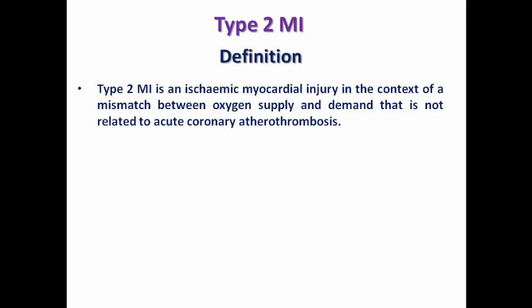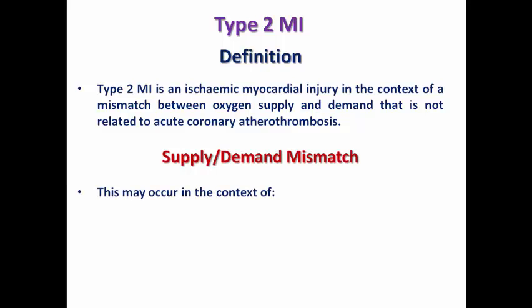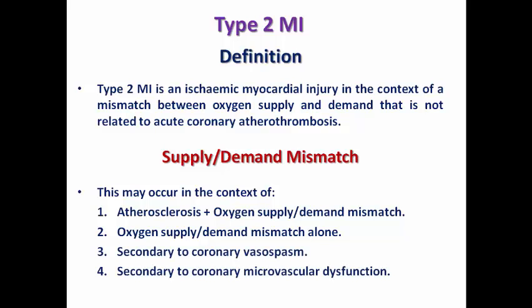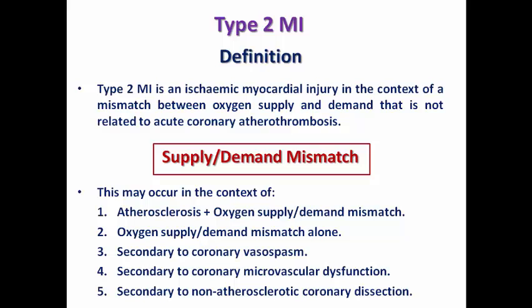Moving to type 2 MI: it is defined as ischemic myocardial injury caused by a mismatch between oxygen supply and oxygen demand. The myocardial muscle fibers do not receive enough oxygen to meet their demands. The pathology is not related to acute coronary atherothrombosis but to supply-demand mismatch, which may occur in the context of underlying atherosclerosis, coronary vasospasm, microvascular dysfunction, or non-atherosclerotic coronary dissection.